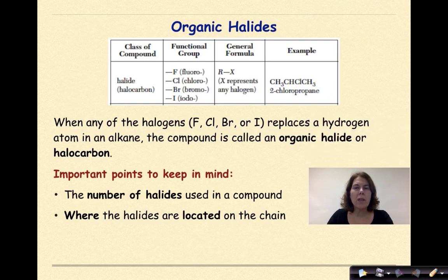So what is an organic halide? When any of the halogens, specifically fluorine, chlorine, bromine, or iodine, replaces a hydrogen atom in an alkane, the compound is called an organic halide or halocarbon. Now could we do this in an alkene or an alkyne? Yes, but for the sake of this course, we're going to focus primarily on the alkanes.